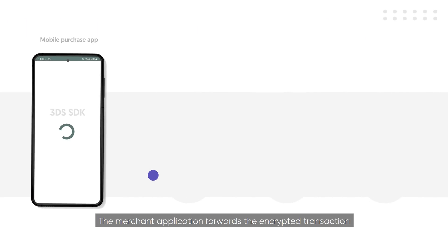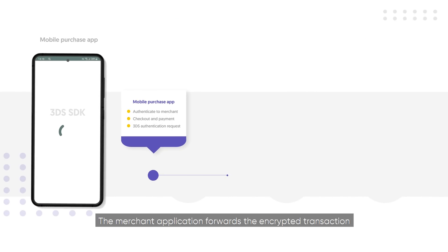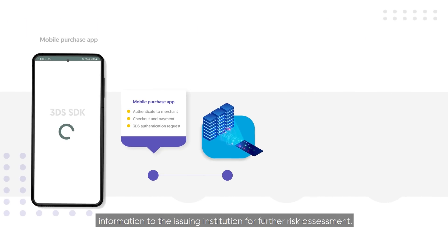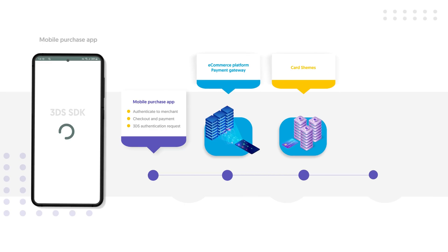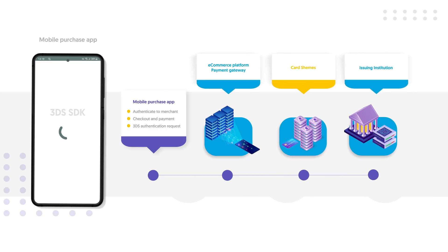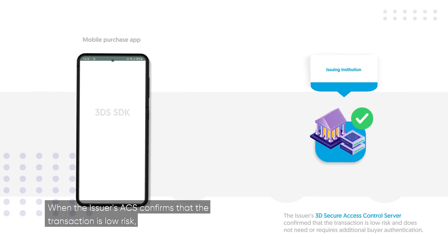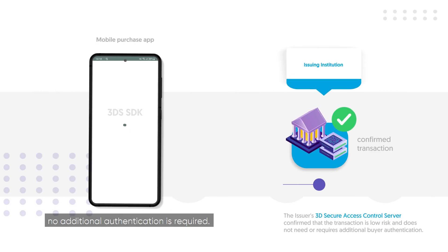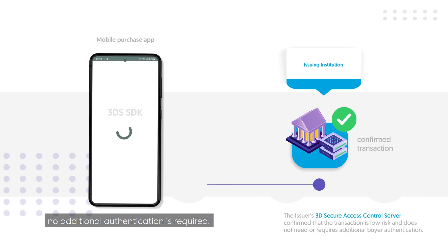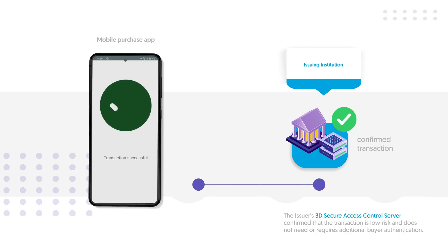The merchant application forwards the encrypted transaction information to the issuing institution for further risk assessment. When the issuer's ACS confirms that the transaction is low risk, no additional authentication is required, and the mobile app notifies the cardholder of a successful purchase.